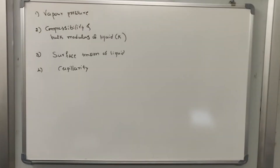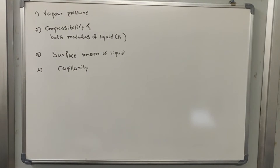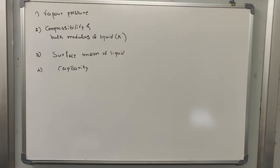The properties already discussed in earlier classes are: mass density, denoted by the symbol rho, which is a very important property; specific weight, represented by the symbol w; specific gravity; and specific volume. Next is vapour pressure.